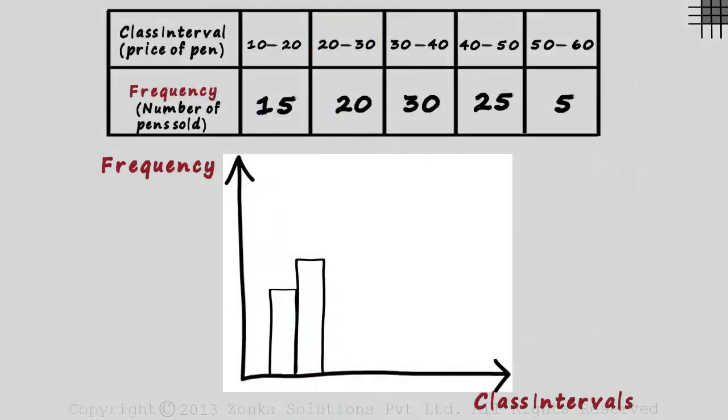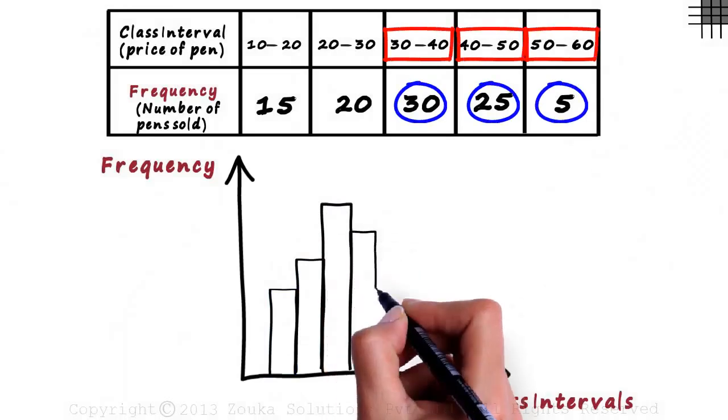Observe that here, there are no gaps between the bars like we had in the bar graph. In the same way, we draw bars for the remaining three intervals.